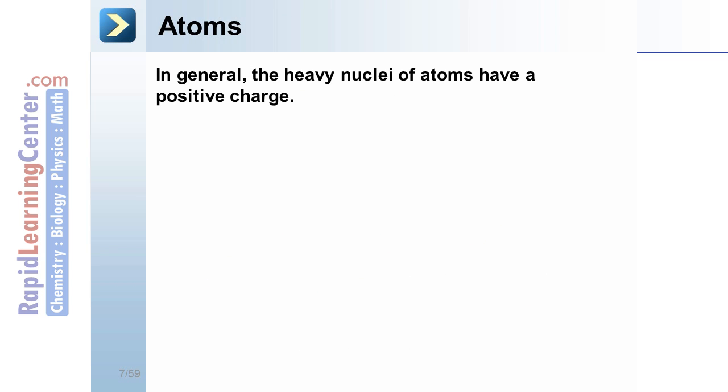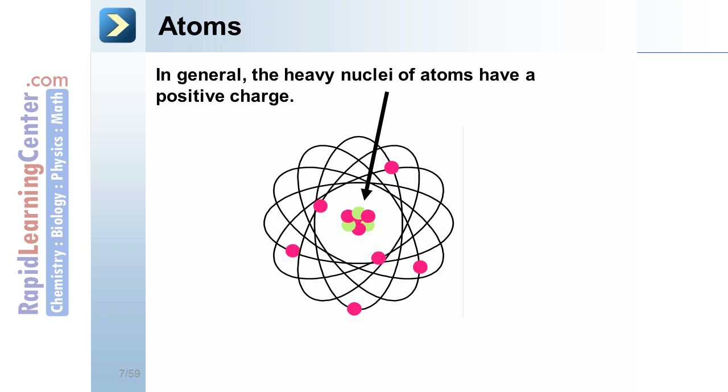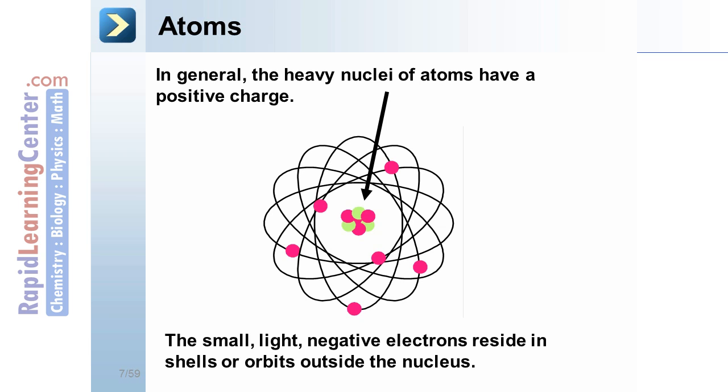Atoms. In general, the heavy nucleus of atoms have a positive charge. This comes from the protons that are in the nucleus. The small light negative electrons are outside the nucleus in shells or orbits.